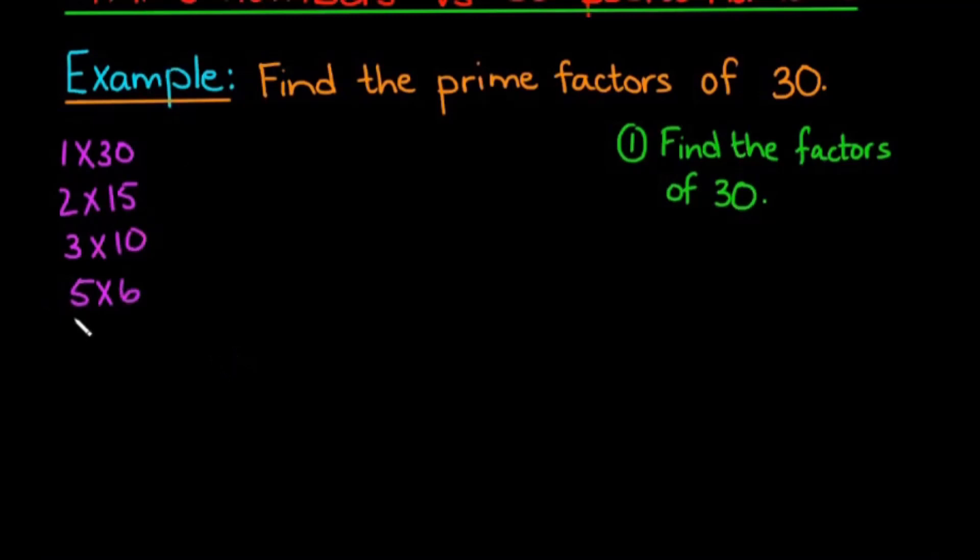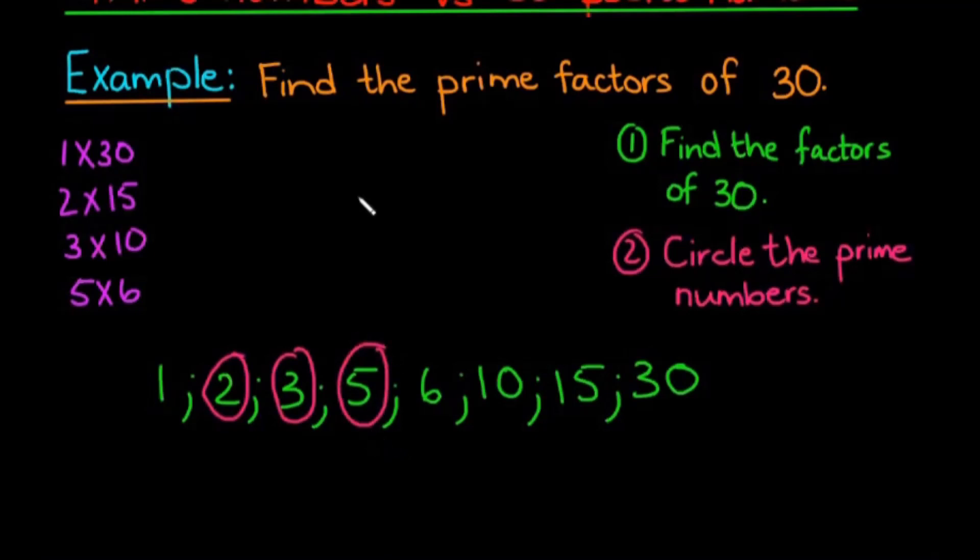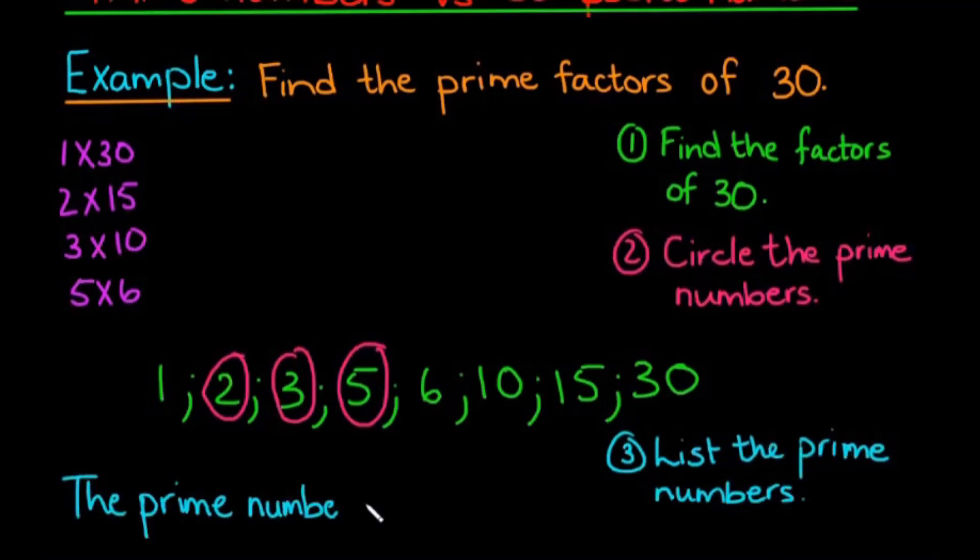So all of those numbers are my factors, and if I put them in list order, they'll be as follows: 1, 2, 3, 5, 6, 10, 15, and 30. Which leads us to our second step, which is to circle the prime numbers. So from here, I can see that 2, 3, and 5 are our prime numbers. Which leads us to our last step, number 3, which is to list the prime numbers. So the prime factors of 30 are 2, 3, and 5.